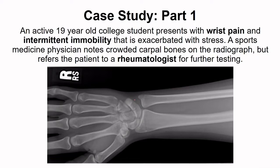Here we see these carpal bones. There's actually a synovial joint between each of them, and the spaces between them are a little bit smaller than usual, but not enough to explain the symptoms of this person.